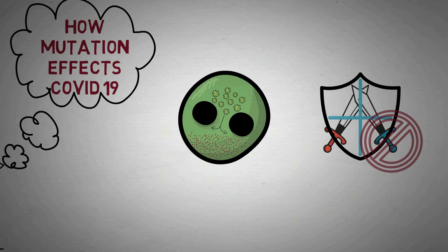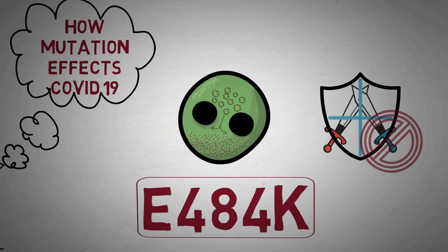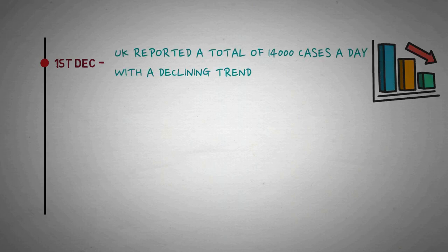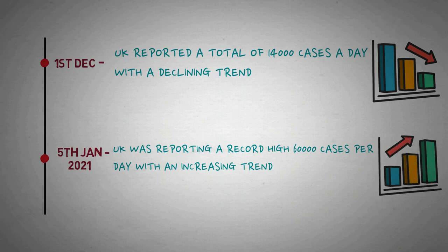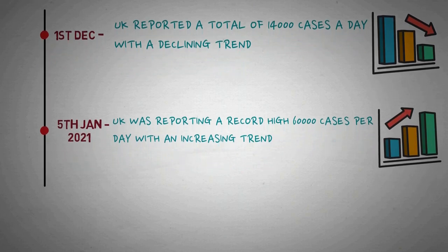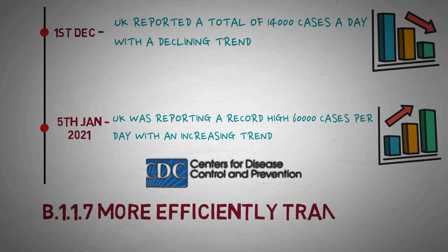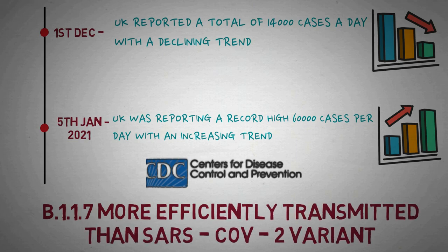This mutation that is keeping scientists awake at night has been termed E484K. On 1st December 2020, the UK reported a total of 14,000 cases a day with a declining trend. After this strain emerged, on 5th January 2021, the UK was reporting a record high of 60,000 cases per day with an increasing trend. The new strain has been found to be more contagious than the previous ones, and the CDC stated that multiple lines of evidence indicate that B.1.1.7 is more efficiently transmitted than other SARS-CoV-2 variants.